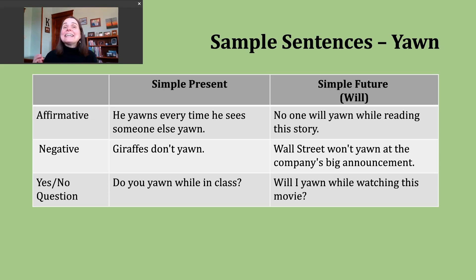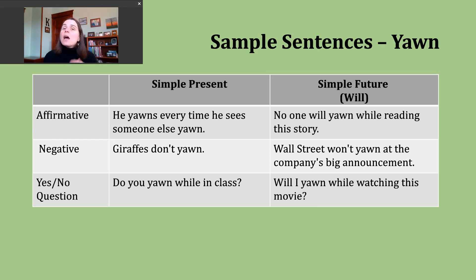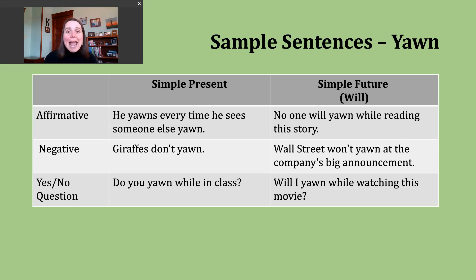Now, if we want to make a negative sentence in the simple present, again we must pay attention to our subject. If our subject is I, you, we, or they, we're going to use 'do not' and then the base verb, or the contraction 'don't.' But if our subject is he, she, or it, we use 'does not' or 'doesn't.' Notice I'm not adding an S to the end of the verb in the negative. An example of a negative sentence might be: 'Giraffes don't yawn.'